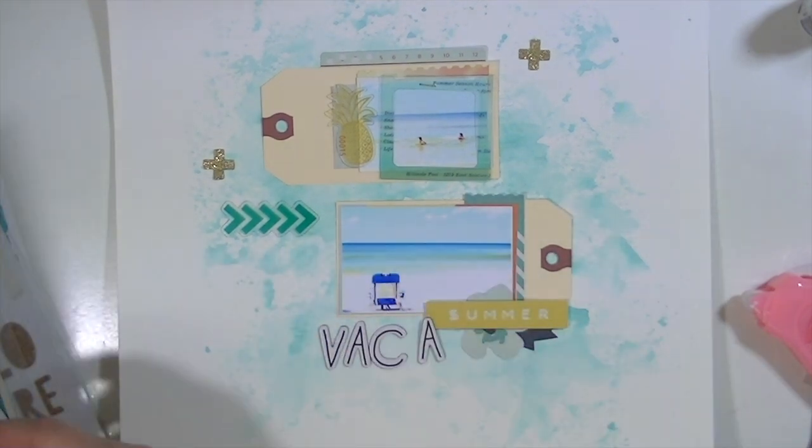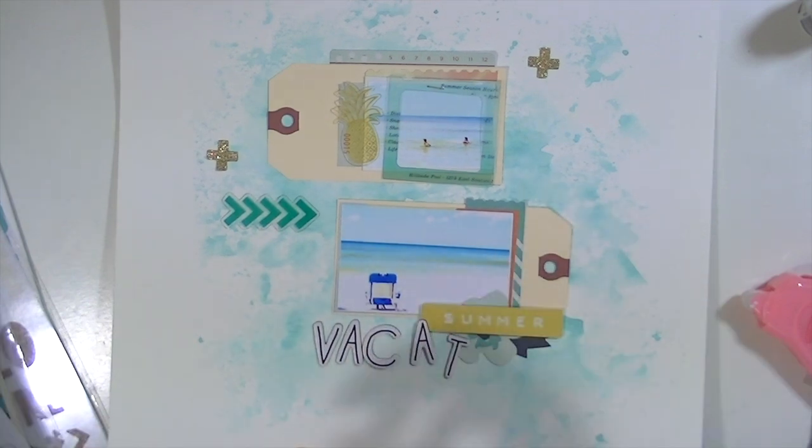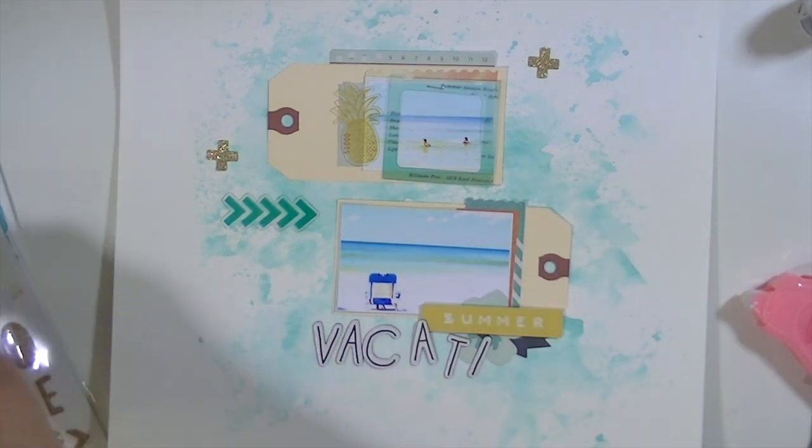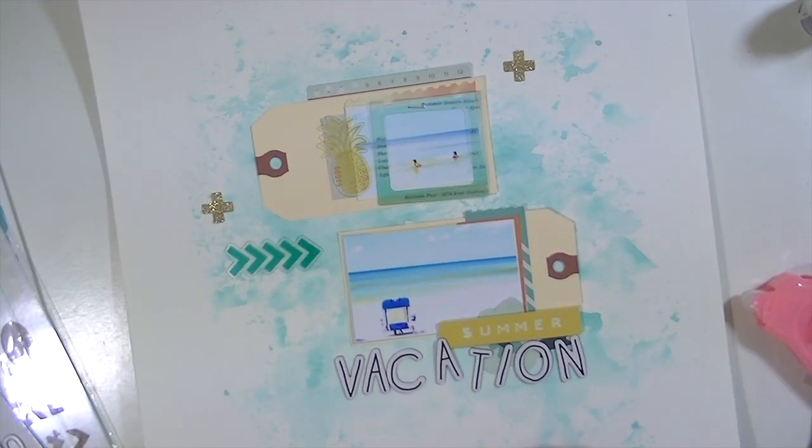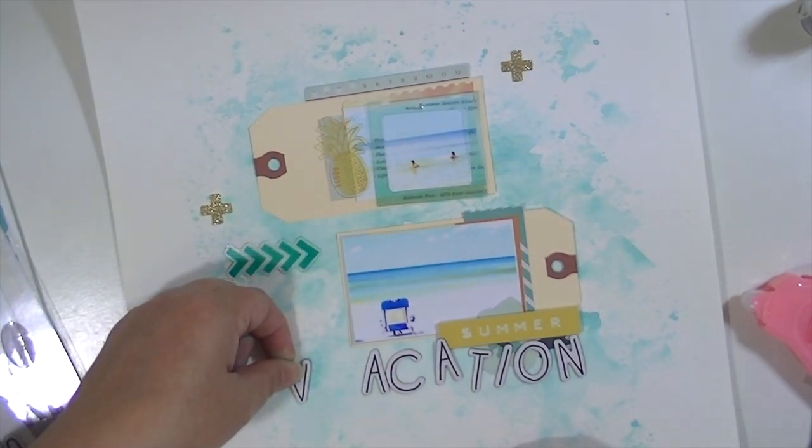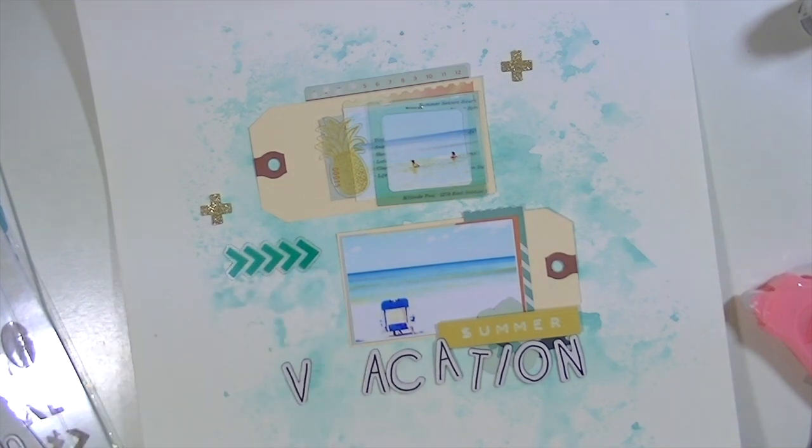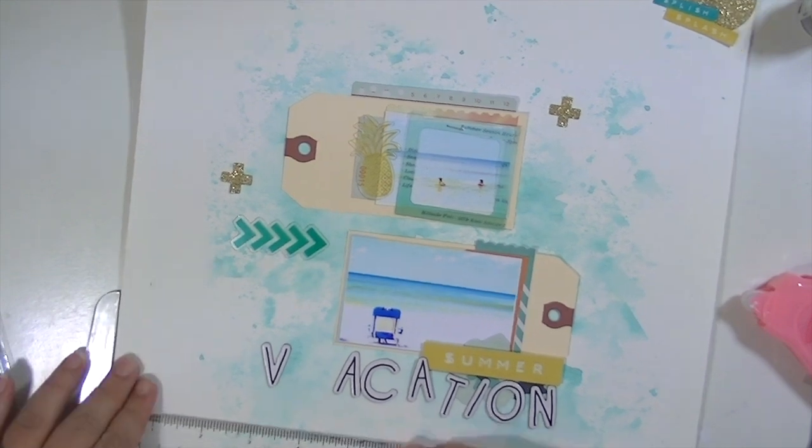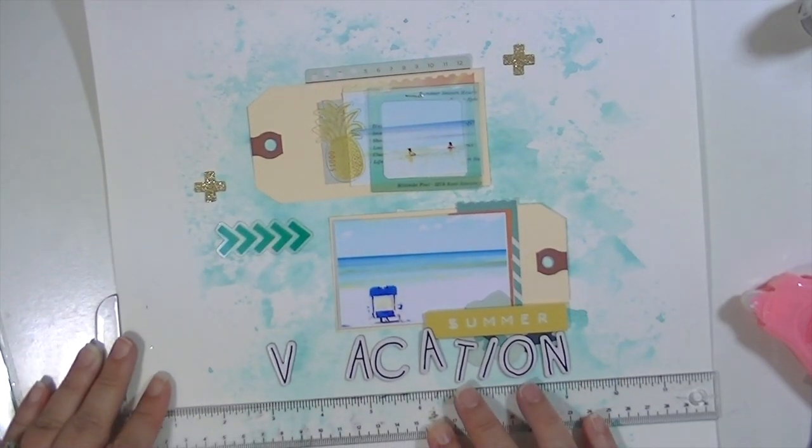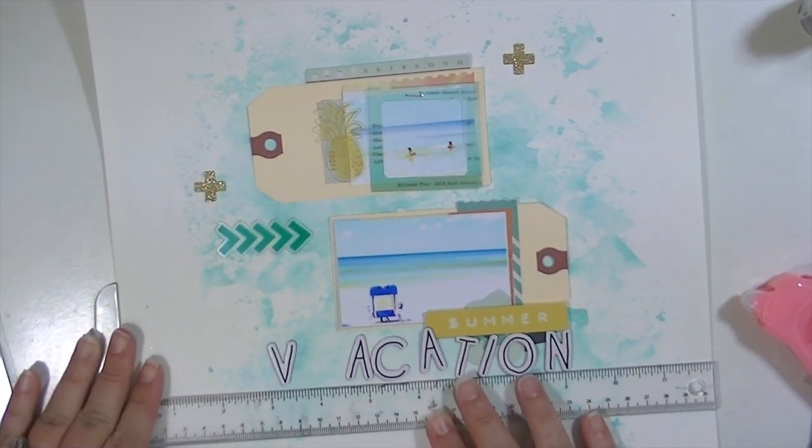Now I'm taking the thickers - I believe these are from the project life kit - and I'm going to put the word vacation down. Then I'm going to add a bunch of the little alphabet stickers from the Poolside 6x12 paper pad. I'm just using my T-square ruler here to kind of line them up, not perfectly but I'm attempting to.